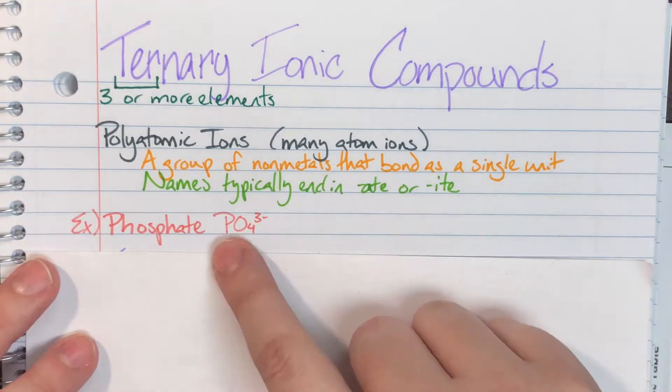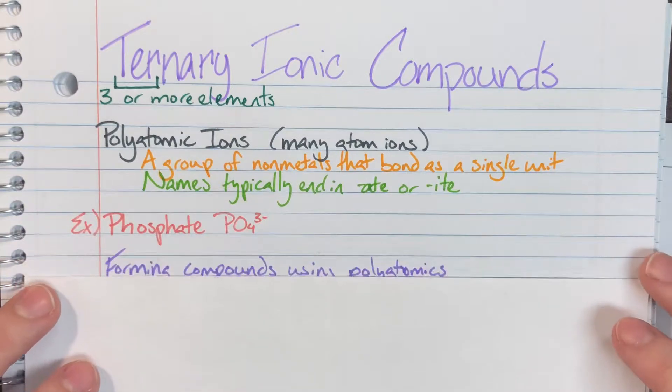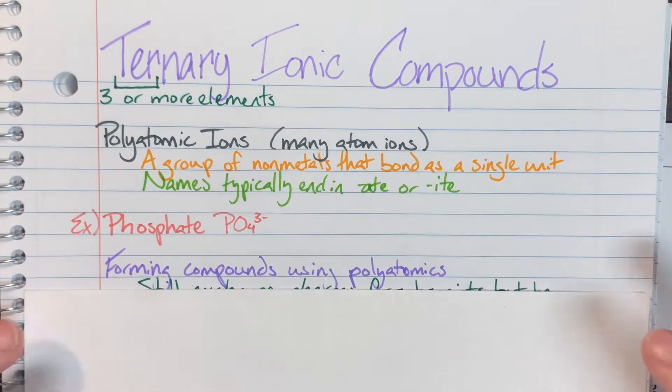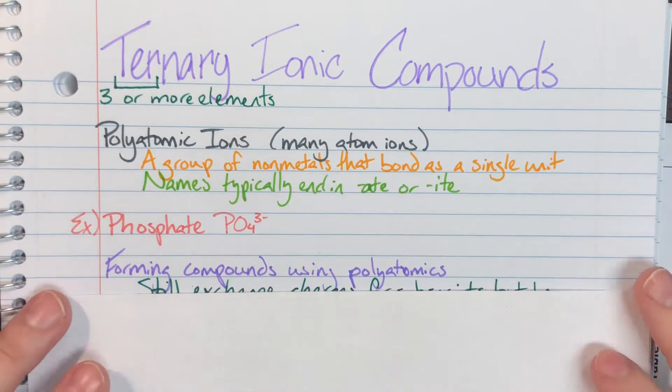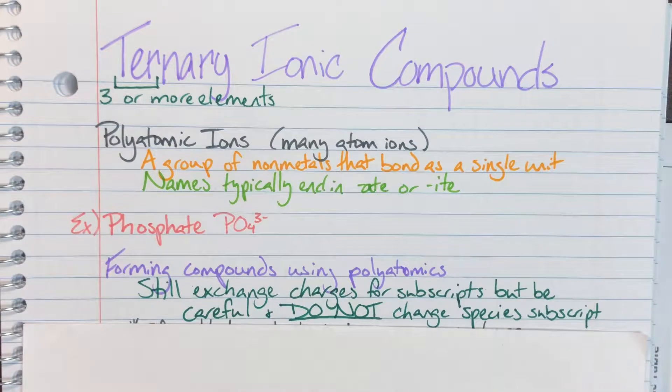Now with phosphate, since we have a subscript here already, we need to be mindful of that when we are forming compounds and using polyatomics inside of those compounds. So we're still going to be exchanging those charges for subscripts. We're still going to be able to use that shortcut there. The thing that we have to be careful of is we cannot change the species subscript, meaning that phosphate has to stick together. There is one phosphorus and there are four oxygens. That has to be true for that to be phosphate.